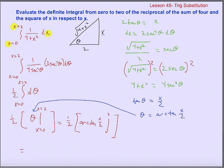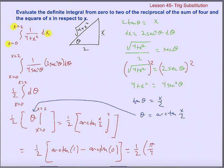So I can evaluate that. One half times the arc tangent of 2 over 2 minus the arc tangent of 0. You are supposed to know that the arc tangent of 1 is pi over 4, and the arc tangent of 0 is 0. So our final answer is one half times pi over 4, which is pi over 8.